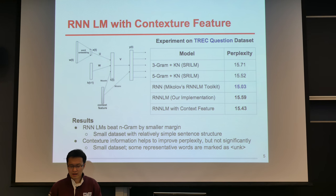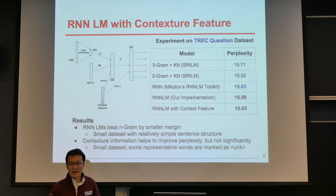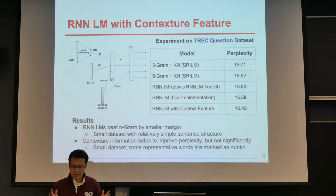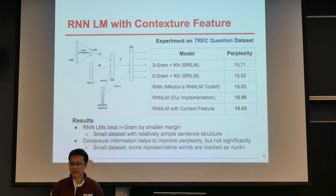We did some analysis on the reason behind this limited improvement. One possible reason is that this is a small dataset, and some highly represented words such as place names, person names, and time expressions were marked as unknown markers during the data pre-processing stage because they appeared only once in the corpus. However, we did see some improvement on sentences with highly represented words by adding the context feature.